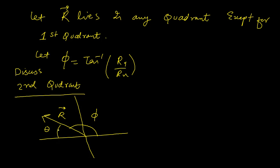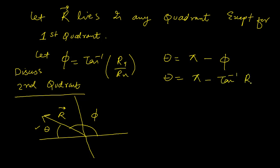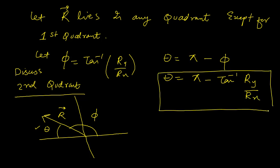So how do we find theta? Because this is the second quadrant, if you look at the angle phi, then theta is equal to pi minus phi. So theta equals pi minus phi — that is how we find theta in the second quadrant. The formula then becomes: theta equals pi minus tan inverse (Ry / Rx).